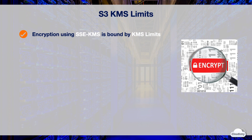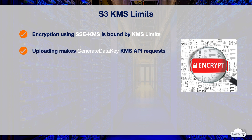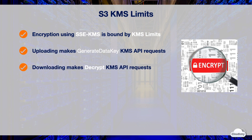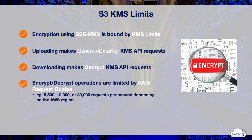When you encrypt objects with SSE-KMS, performance is bound by the KMS limits. When you upload an object using SSE-KMS, it makes a GenerateDataKey KMS API request. When you download an object encrypted by SSE-KMS, it makes a Decrypt KMS API request. S3 makes these KMS API requests on your behalf, and these requests count towards your regional KMS request quotas. Currently, you can have 5,500, 10,000, or 30,000 requests per second depending on the AWS region.